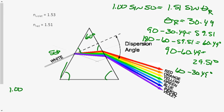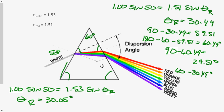So we'll go 1.00 sine of 50 equals 1.53 sine of the refracted angle. And theta refracted this time is equal to 30.05 degrees. Now let's do our little trick to get an angle that is incident upon there. I'm just going to take 60 minus 30.05, and that's going to give me 29.95 degrees.